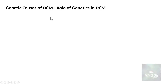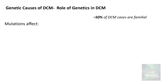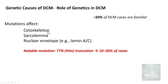Regarding genetic causes, 50% of dilated cardiomyopathy cases are familial in nature. The mutations affect cytoskeletal proteins, sarcolemmal proteins, or even nuclear envelope proteins like Lamin A or C. The most important mutation involves the titin protein, or TTN truncation, which accounts for 10 to 20% of dilated cardiomyopathy cases.